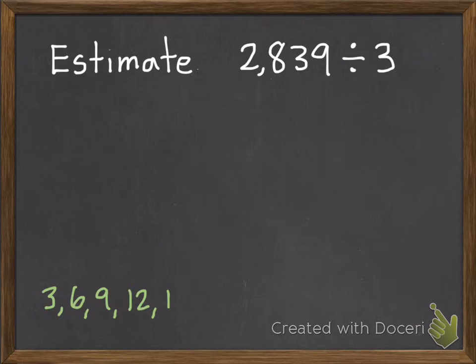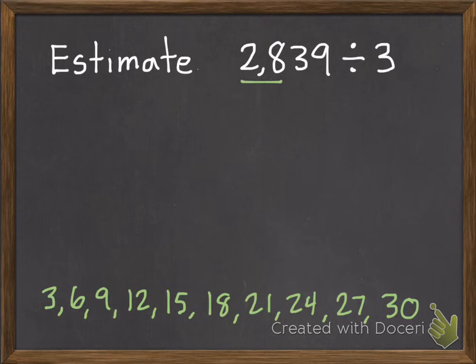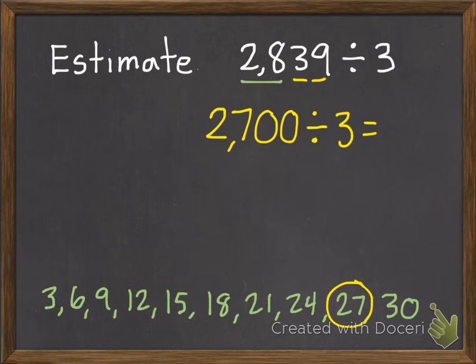Okay, our compatible numbers of 3 are 3, 6, 9, 12, 15, 18, 21, 24, 27, and 30. That's 28. The one of those that's closest to 28 is 27. Fill in our other place value spots as zeros after that. Divide it by 3, 9, 2 zeros. So 900.